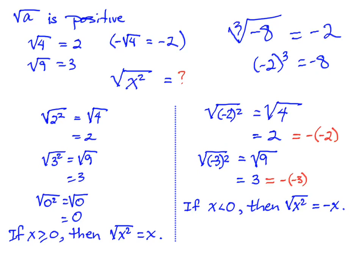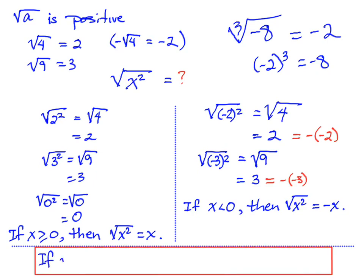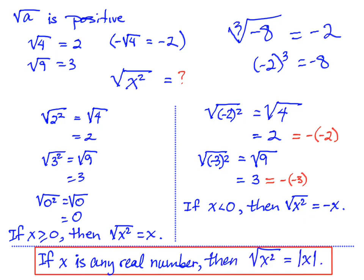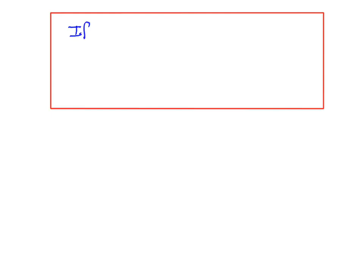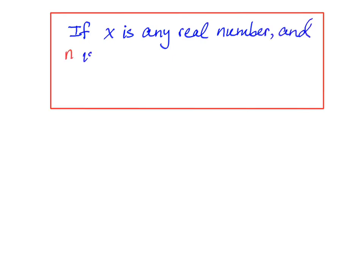To make sure the result is always positive, we use the absolute value symbol. If x is any real number — positive or negative — then sqrt(x²) equals the absolute value of x. That always guarantees we get the positive square root regardless of whether x is negative. The same rule works for fourth roots, sixth roots, eighth roots, and so on. In general, if x is any real number and the index n is even, then the nth root of xⁿ equals the absolute value of x.